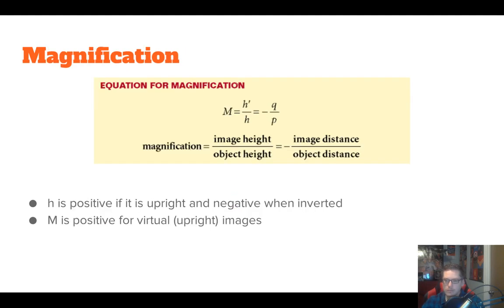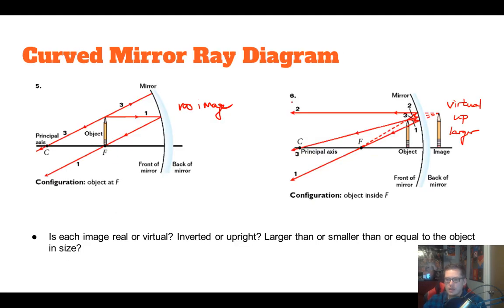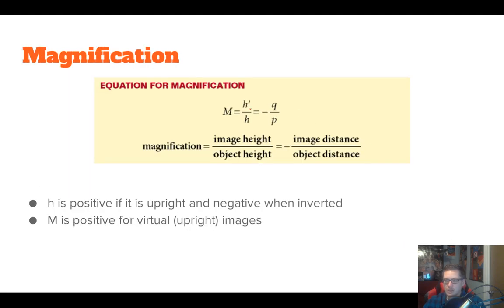You also need the magnification equation, which tells you how big the image will be — twice as big, half as big, etc. There are two ways to calculate it: image height over object height, or more usefully, M = −Q/P. M will always be positive for virtual images and negative for inverted real images.